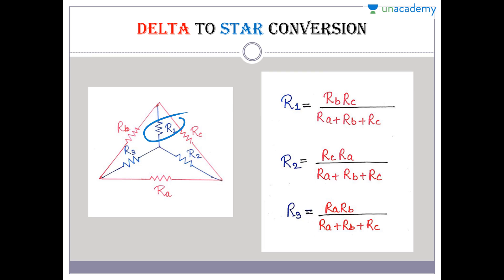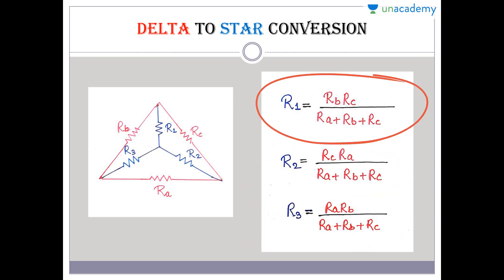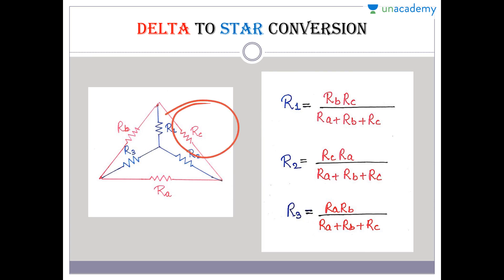To find R1, we first need the equivalent delta resistance for the denominator. The denominator is the same for all: R_A + R_B + R_C. Now the numerator changes according to the position of each resistance. To find R1, we look at the adjacent delta resistances connected to R1, which are R_B and R_C. So R1 = (R_B × R_C) / (R_A + R_B + R_C).